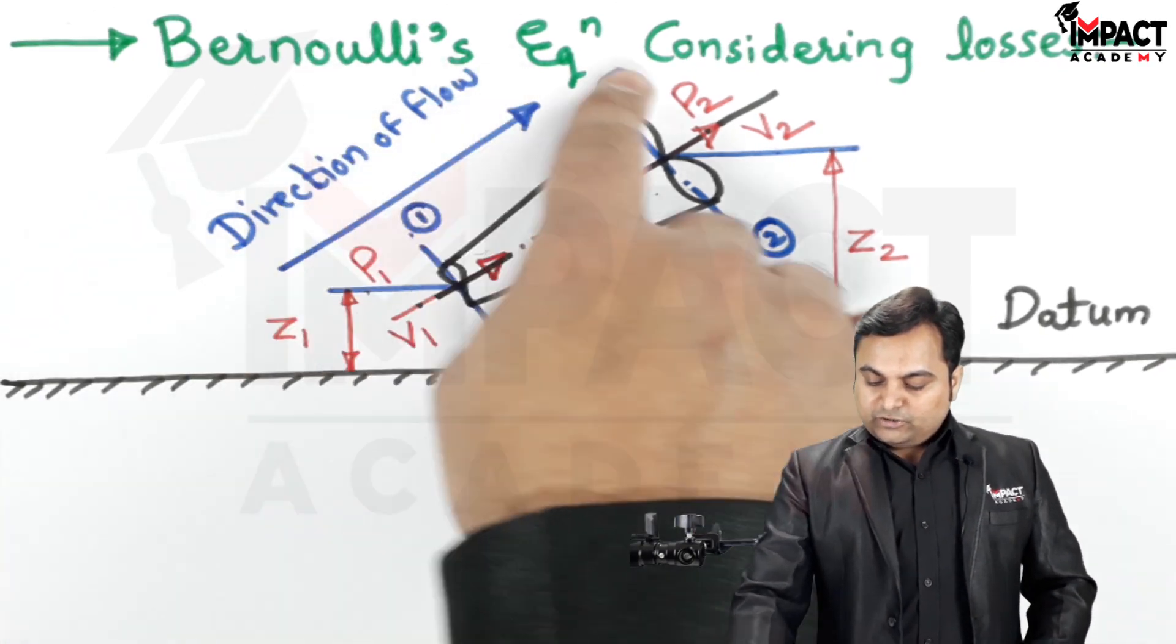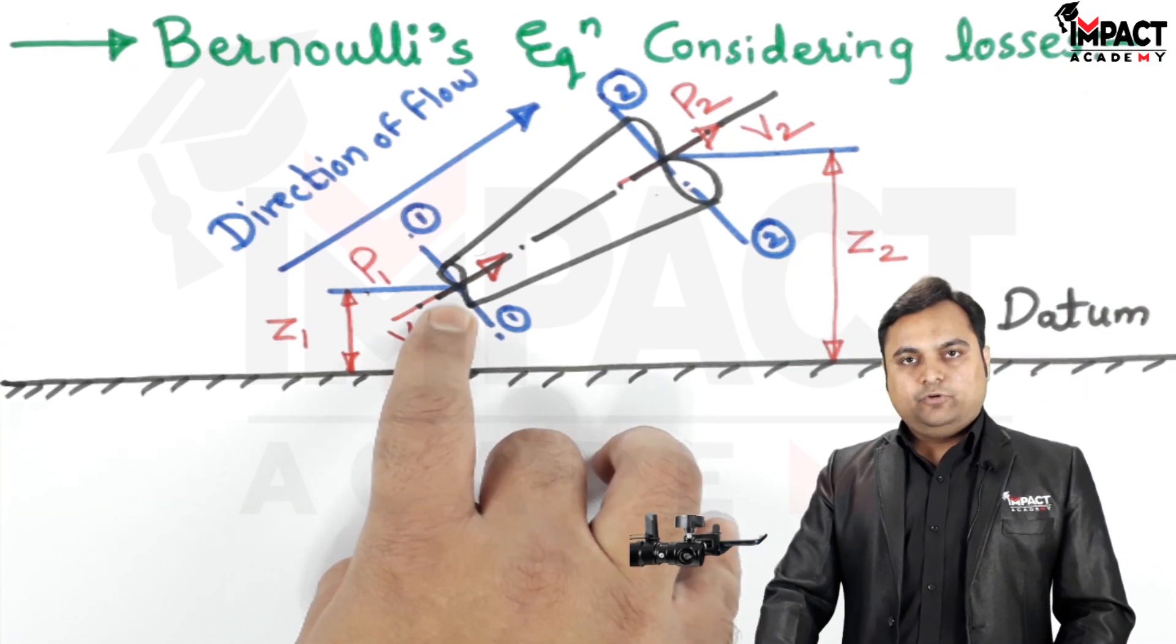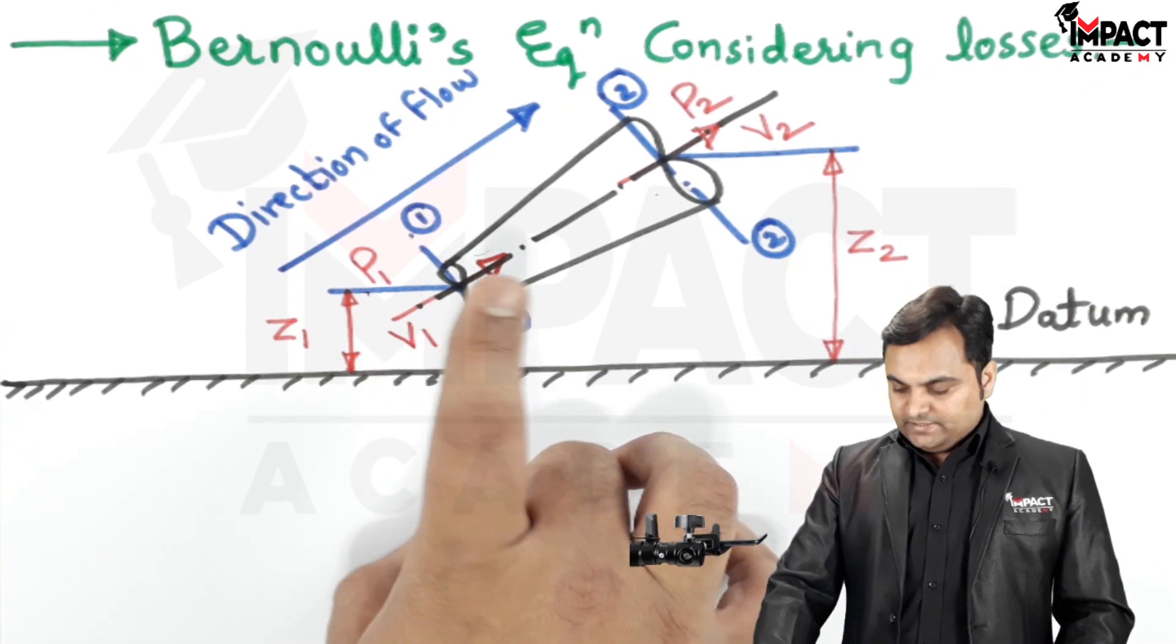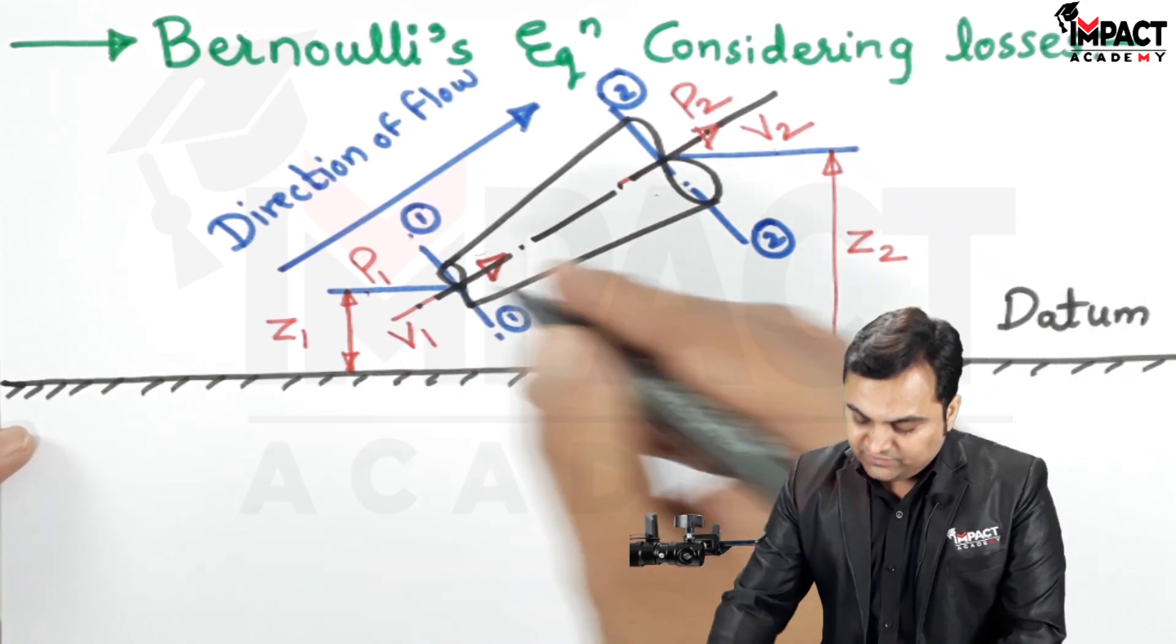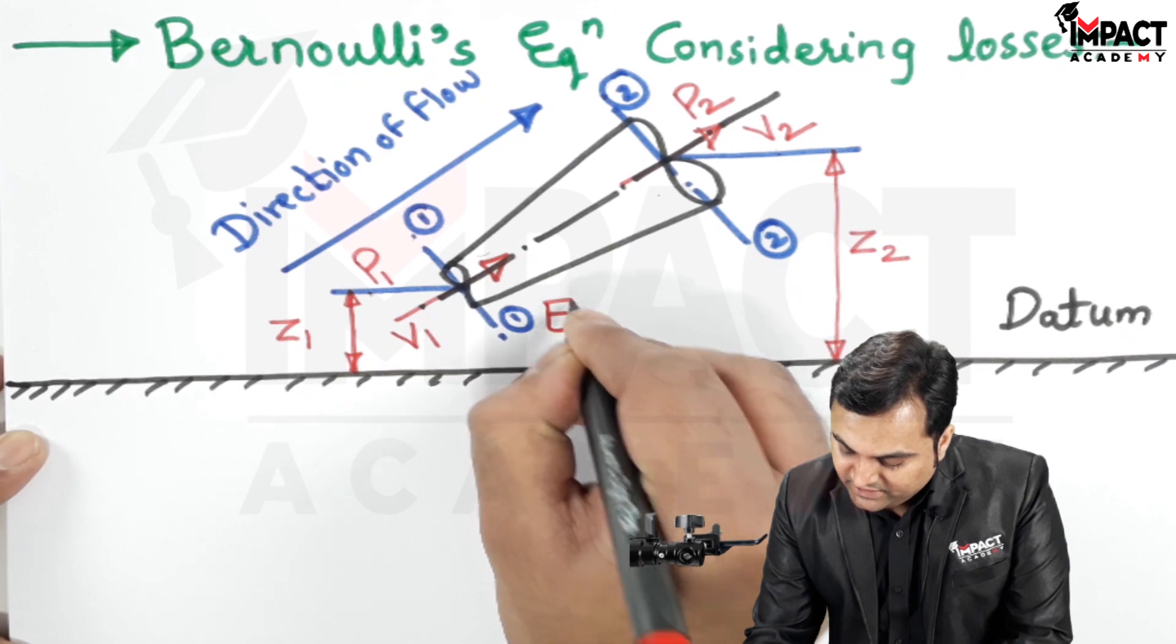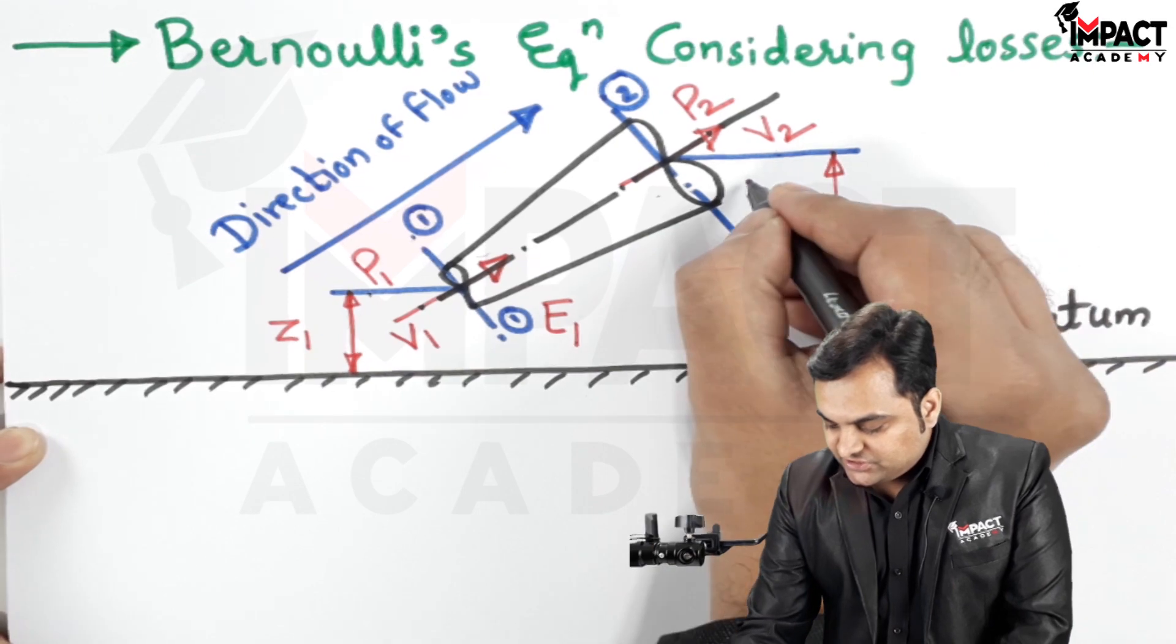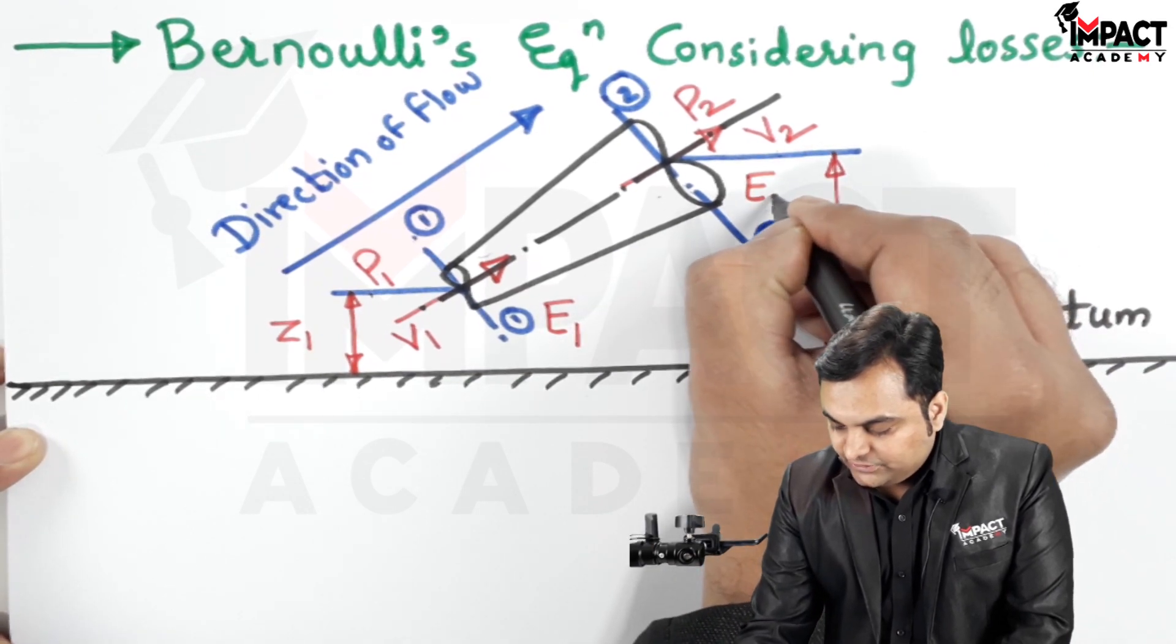Now the Bernoulli's equation considering losses means that when the fluid is starting to flow from point number 1, then the total energy which the fluid has is denoted by E1, and the total energy which is there at section 2 is denoted as E2.